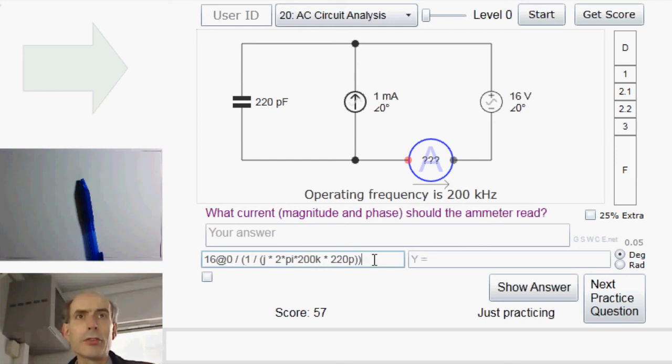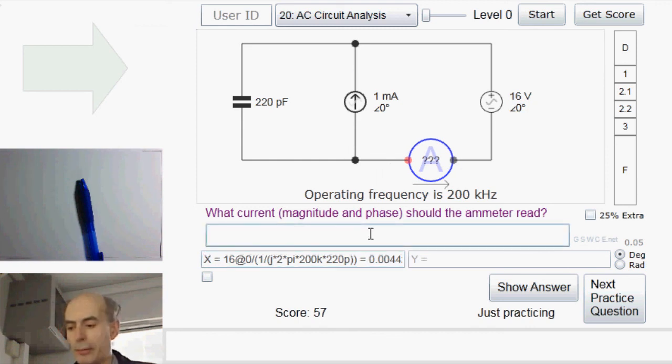Right, so that is the current that should be flowing through the capacitor going down this way, from the higher voltage to the lower voltage. So that will be the current flowing along here. Well, the current through the ammeter must be the current flowing into here minus the current flowing up there, which is 1 milliamp. I've just worked out the current flowing along here. So if I subtract 1 milliamp, I must get the current flowing through this ammeter. It's just x minus 1 milliamp.